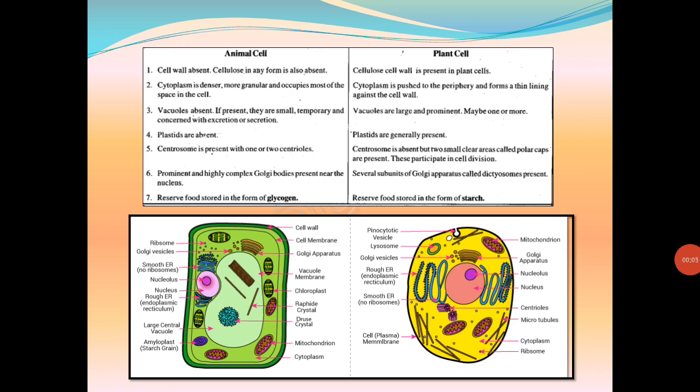Here are some differences between animal cells and plant cells. Cell wall is absent in animal cells but present in plant cells (made of cellulose). Cytoplasm is denser and occupies most space in animal cells, while in plant cells it is pushed to the periphery forming a thin lining against the cell wall. Vacuoles are absent or very small in animal cells but large in plant cells. Plastids are absent in animal cells but present in plant cells. Centrosome with two centrioles is present in animal cells but usually absent in plant cells. A prominent Golgi body is present near the nucleus in animal cells, while plant cells have several subunits called dictyosomes. Reserve food is stored as glycogen in animal cells and as starch in plant cells.